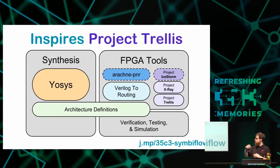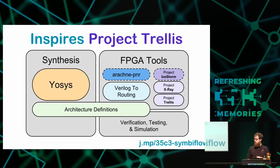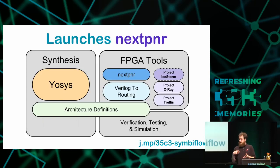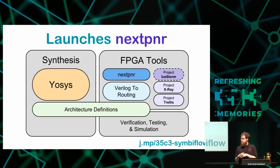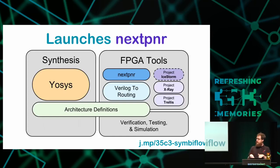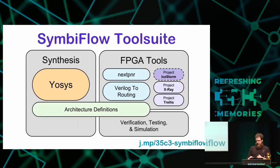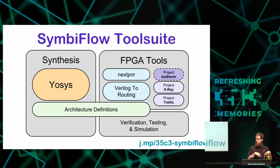That inspired Project Trellis — a project to document the bitstream for the ECP5 Lattice FPGA, which is another large FPGA. We were originally targeting Verilog-to-Routing, but some people on the team wanted to create a new place-and-route tool from scratch. So the people at Symbiotic EDA launched NextPNR as an alternative to Verilog-to-Routing, to provide another option for doing place and route. This is what we call the SymbiFlow tool suite — what enables you to take a Verilog file and convert it into a bitstream you can load on an FPGA.